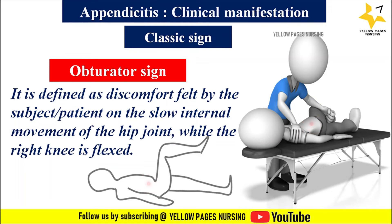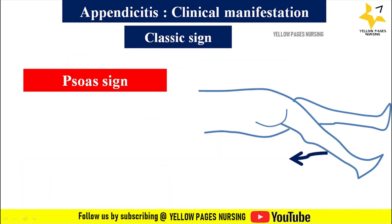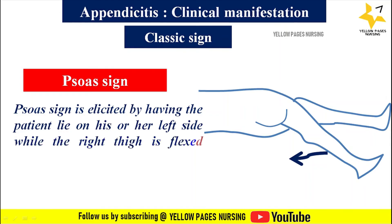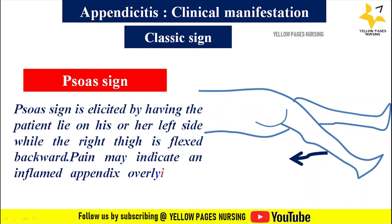The next sign is the psoas sign. The psoas sign is elicited by having the patient lie on their left side while the right thigh is extended backward. Pain may indicate an inflamed appendix overlying the psoas muscle.